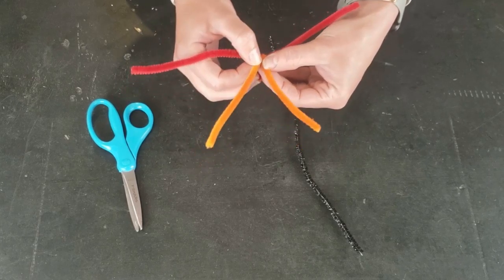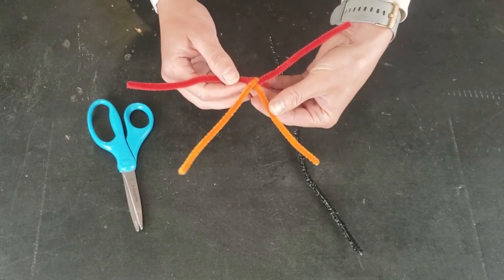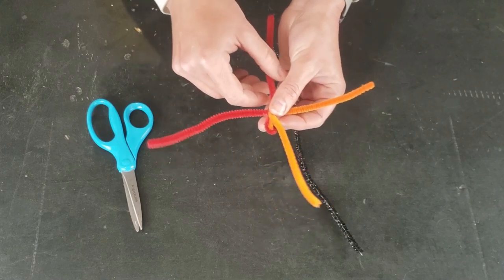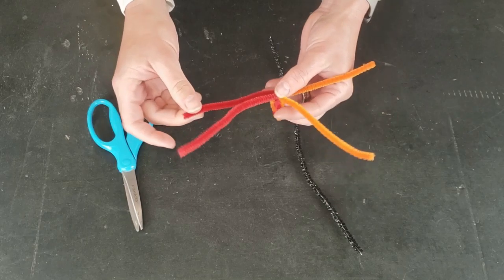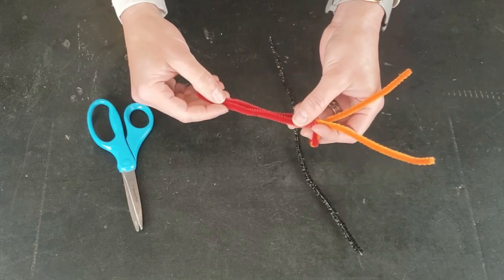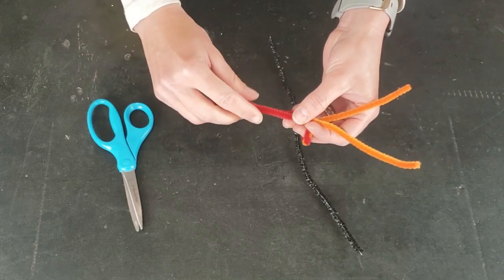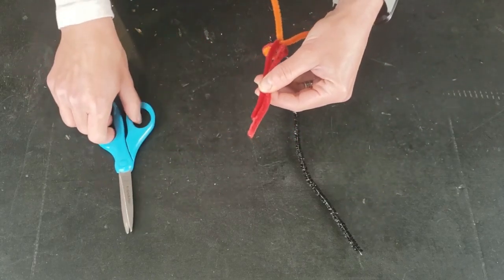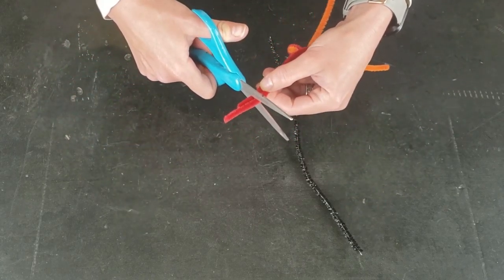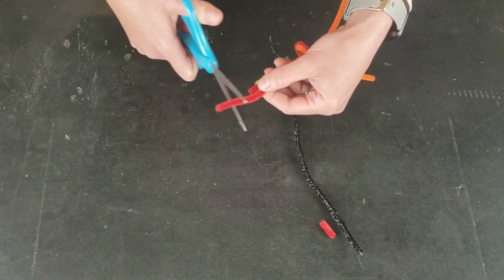And you want to bring the pieces so that your top, whichever pipe cleaner pieces you want to be the top of your butterfly, are pointing in one direction together and the other pieces are pointing down in the opposite direction.